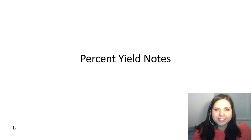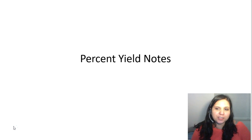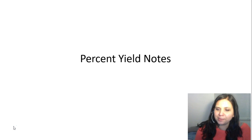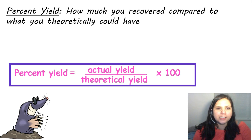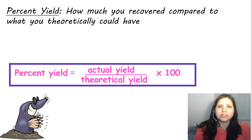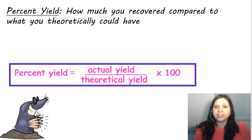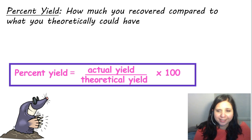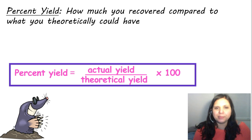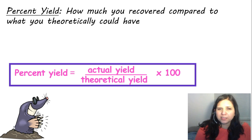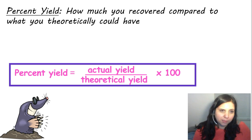Hi guys, this is Thompson here. Today we're going to go over percent yield, continuing with our stoichiometry. Percent yield is how much you've actually recovered in a lab compared to what you theoretically could have obtained, and the theoretical part is always calculated by doing some stoichiometry.